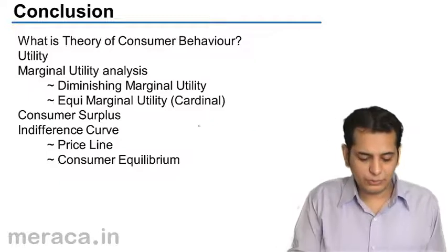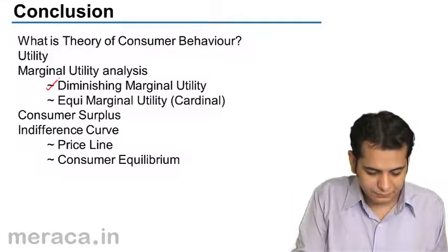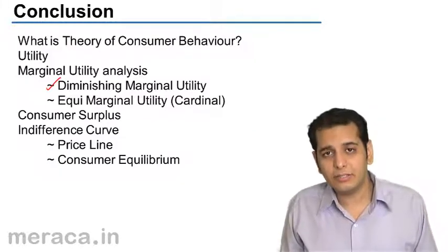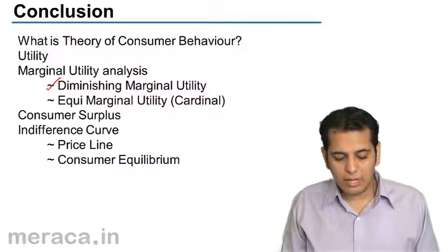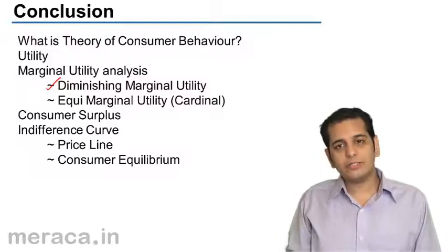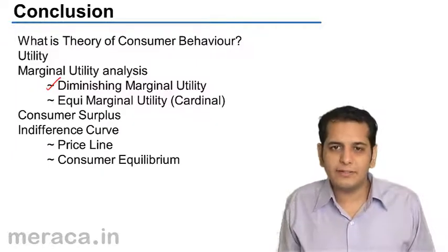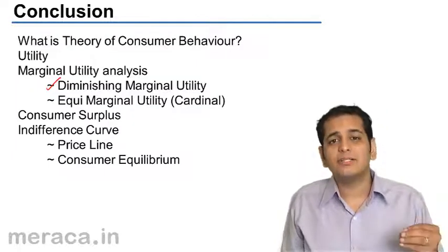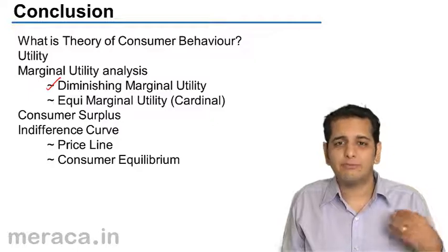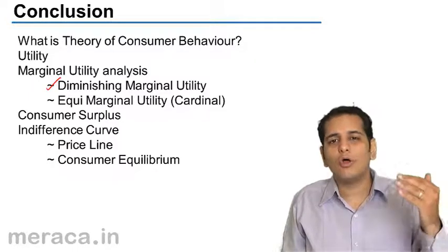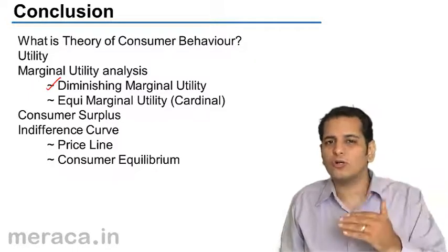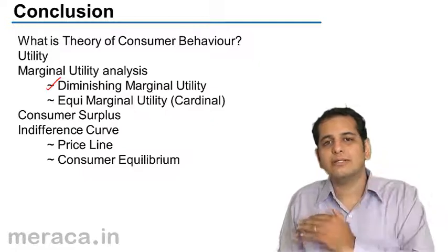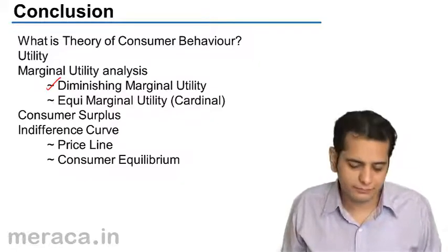In marginal utility, we studied the law of diminishing marginal utility. This law states that the marginal utility derived from extra consumption always goes on diminishing — it keeps on declining or reducing.